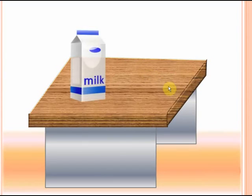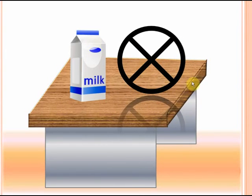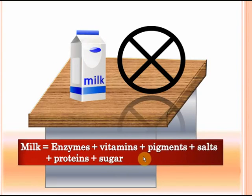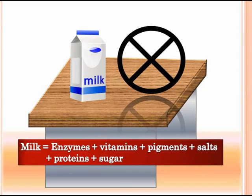On the other hand, look at milk. Is milk a pure substance? Scientists have analyzed milk using different processes like filtration, a special process called crystallization, and many other processes. They have concluded that milk is not a pure substance. In fact, milk contains enzymes, vitamins, pigments, salts, proteins, and sugar. The point is that milk can be broken down into these substances. If you carry out many physical processes — like if you boil it and carry out a special process called pasteurization — milk can actually be separated into all these components. So milk is a mixture; it's not a pure substance.